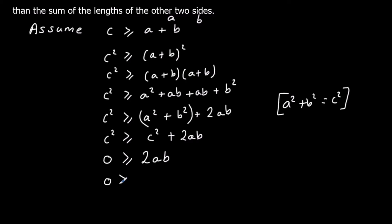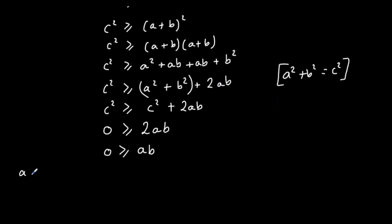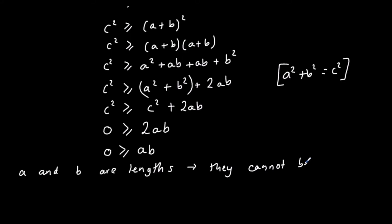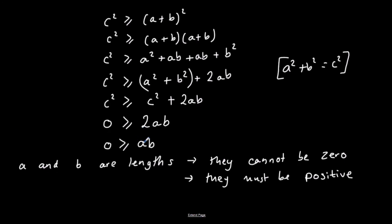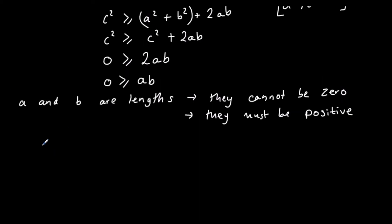I can halve it to get zero is bigger than or equal to A times B, meaning A times B is less than or equal to zero. But A and B are lengths — they must be greater than zero, non-zero and positive. You can't have a negative length or a length of zero. So a positive times a positive is a positive, meaning A times B is bigger than zero. We've found a contradiction.